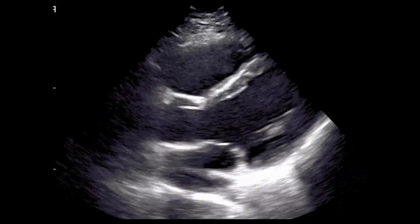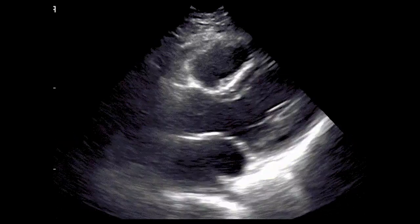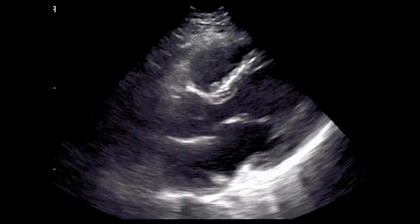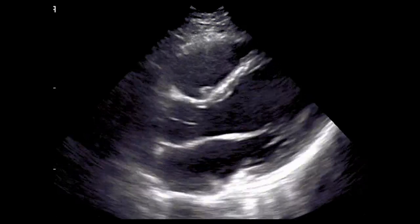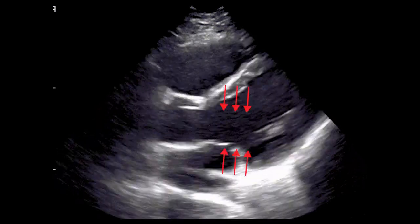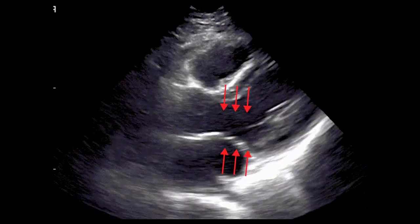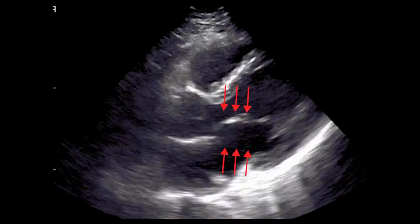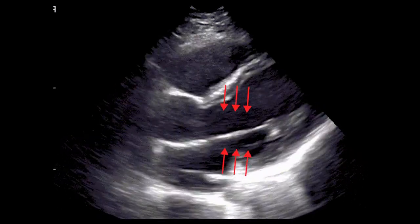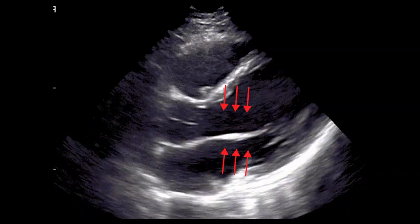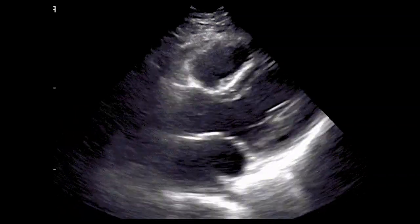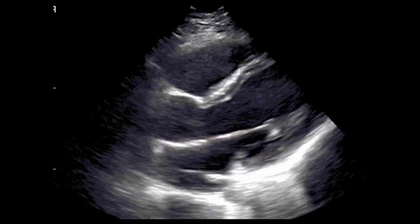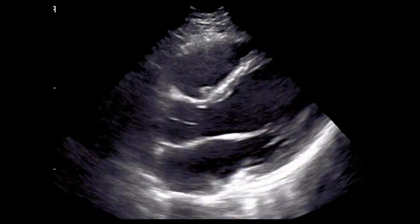Another structure that can add data to your gestalt is the movement of the anterior mitral valve leaflet, seen here, which will typically open more vigorously in a heart that has better systolic and diastolic function. Quantifying this movement will be the subject of a future video.